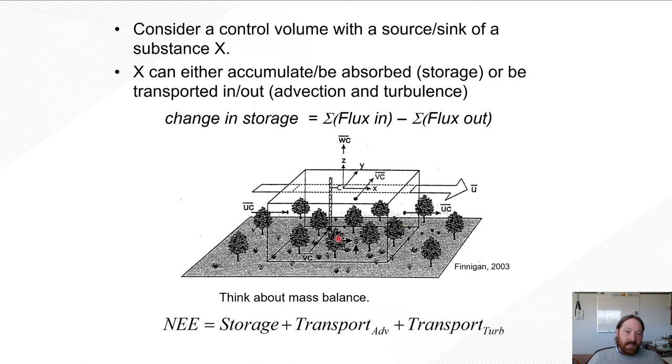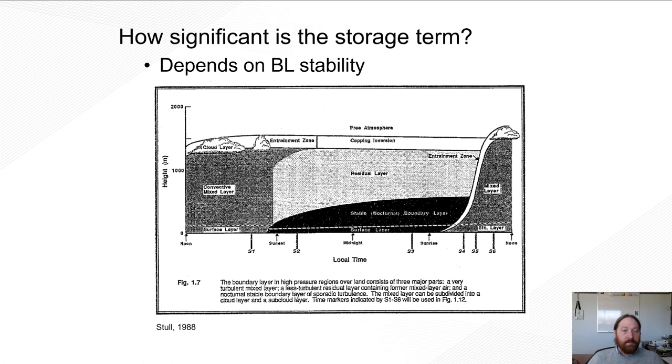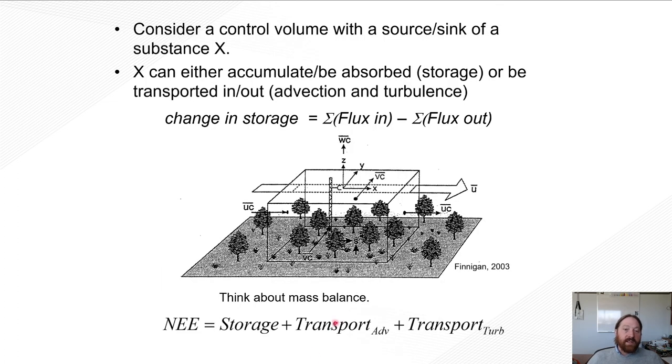Okay? So the source or sink strength we can represent as the net ecosystem exchange. It's what our eddy covariance system is measuring. That equals the storage plus the advective transport plus the turbulent transport. Now, coincidentally, eddy covariance has a lot of assumptions and with those assumptions, such as having that homogeneous canopy, homogeneous horizontal canopy, we can throw away a lot of terms such as advective transport, which leaves us with turbulent transport and storage.